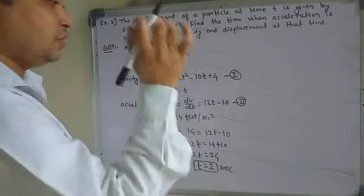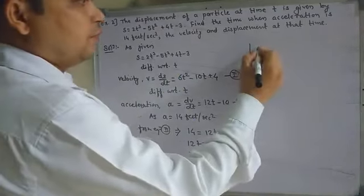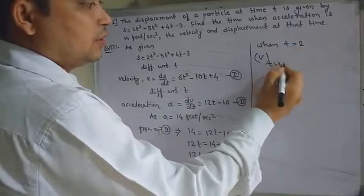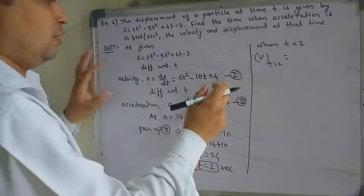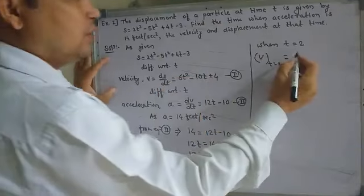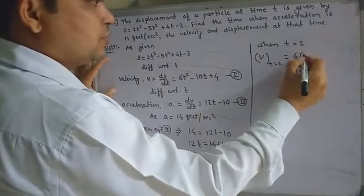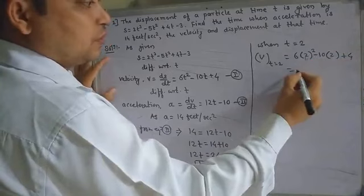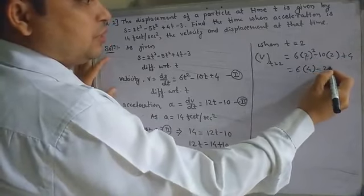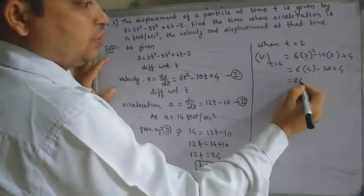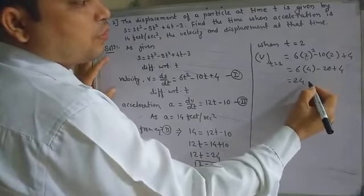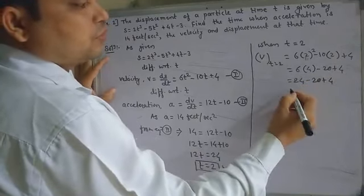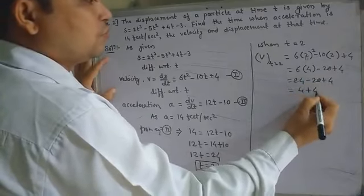When t = 2, what will be the velocity? From equation 1, put t = 2: v = 6(2²) − 10(2) + 4 = 6(4) − 20 + 4 = 24 − 20 + 4 = 8. So velocity is 8 feet per second.